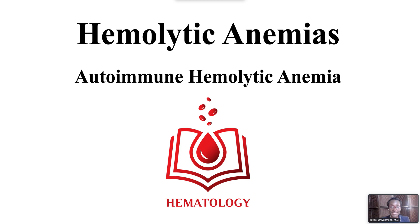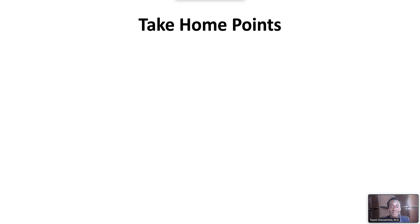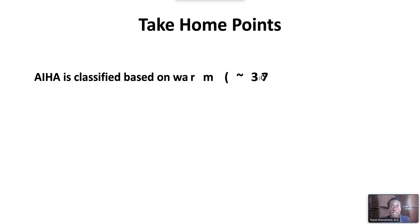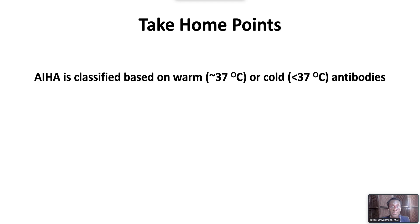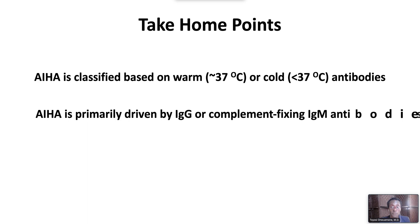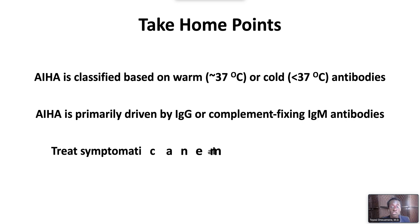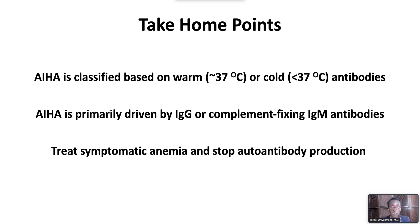Welcome to hemolytic anemias: autoimmune hemolytic anemia. We have the following take-home points. Autoimmune hemolytic anemia is classified based on the presence of warm or cold antibodies. It is primarily driven by IgG or complement-fixing IgM antibodies. To manage autoimmune hemolytic anemia, treat symptomatic anemia and stop autoantibody production with immunosuppression.